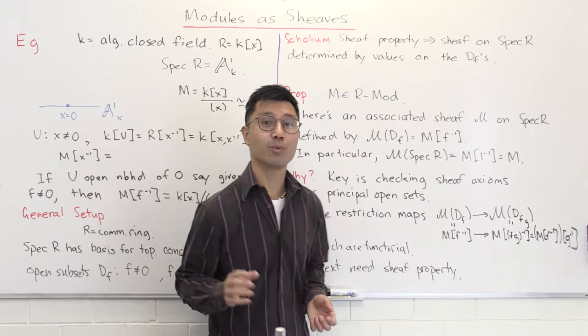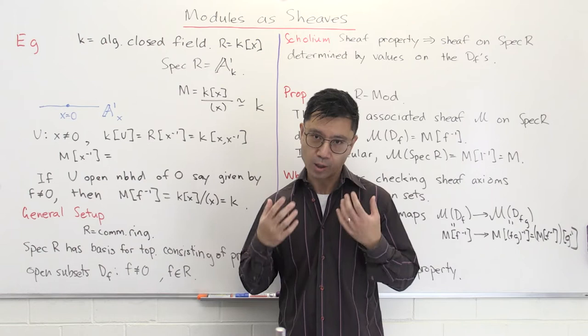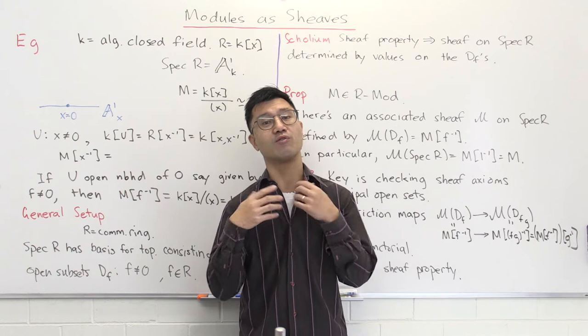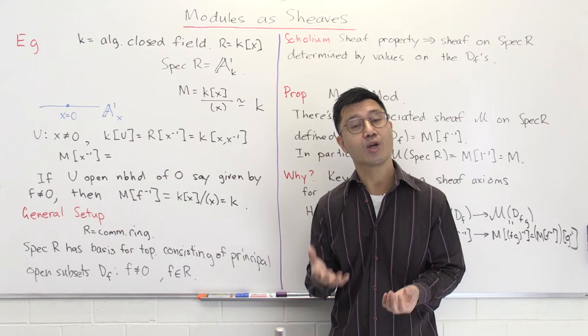Hi, I'm Daniel Chan from UNSW Sydney. Welcome to another adventure in pure mathematics. Grothendieck equated for us the study of affine algebraic geometry and commutative algebra. So that means some algebraic notions, such as modules over commutative rings, should have some sort of geometric interpretation. And indeed that is the case. What I want to show you in this video is how modules are examples of sheaves.